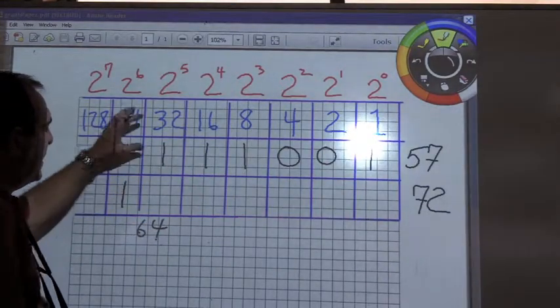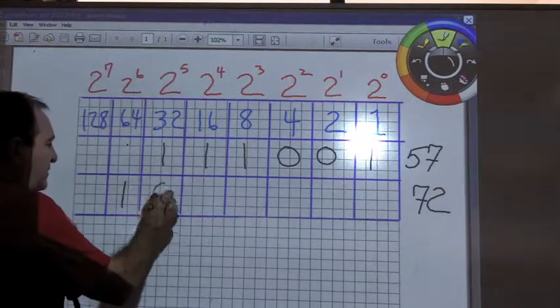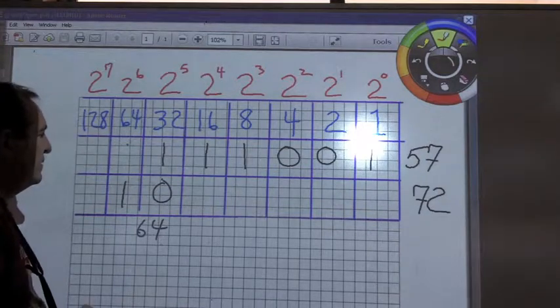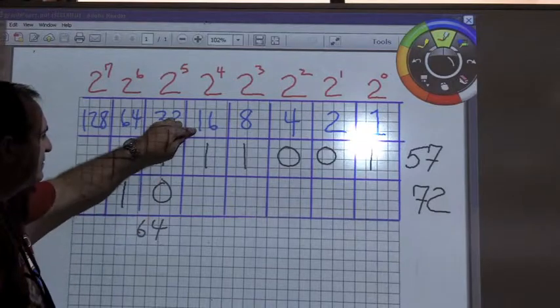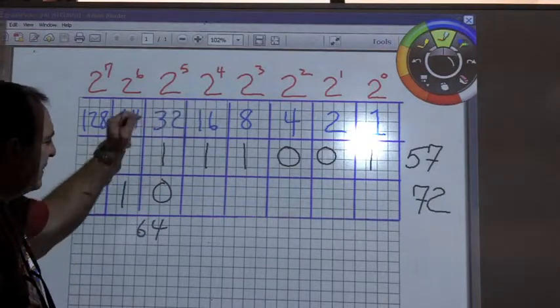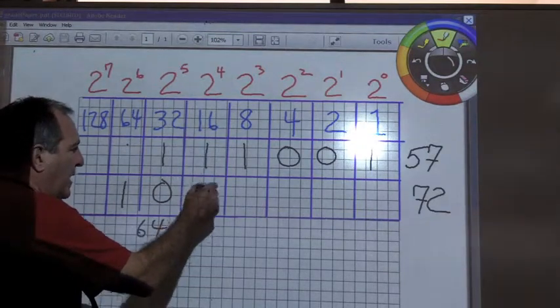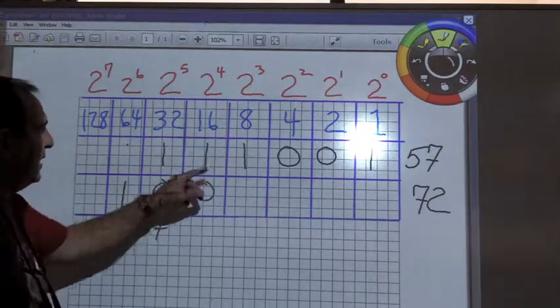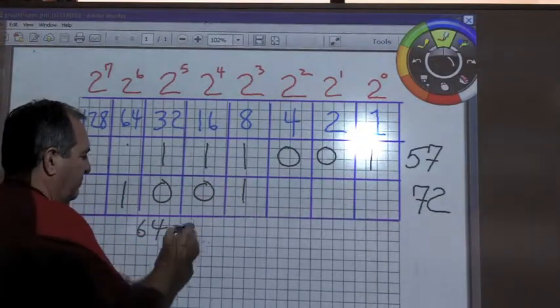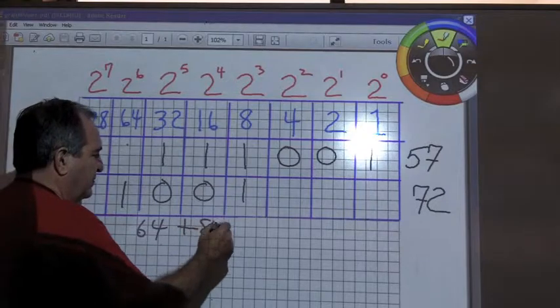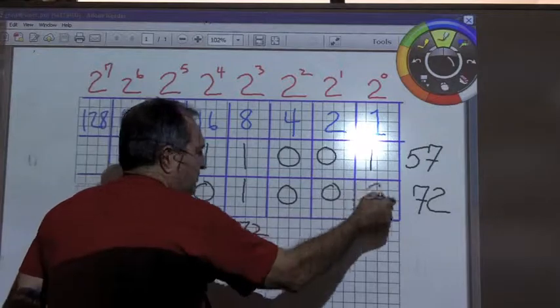Now, if I added 32, I would have 96 and that number would be too big. So, I don't need a 32. If I add 16 to this, once again, let's see, 64, 74, and that would be 80. That would be too large again. So, I don't need that. 64 and 8, though, happens to be the magic number. I need an 8, which is equal to 72, but I don't need this one, I don't need this one, and I don't need